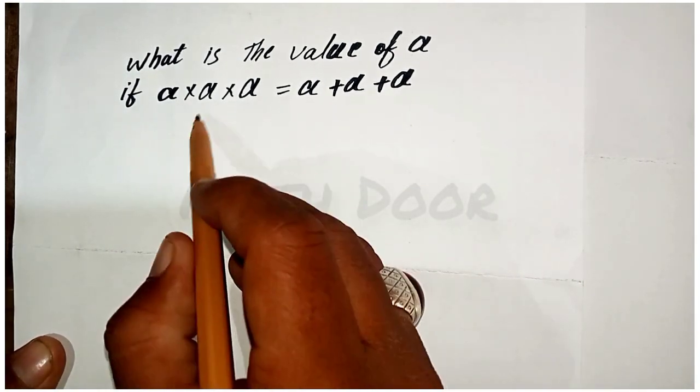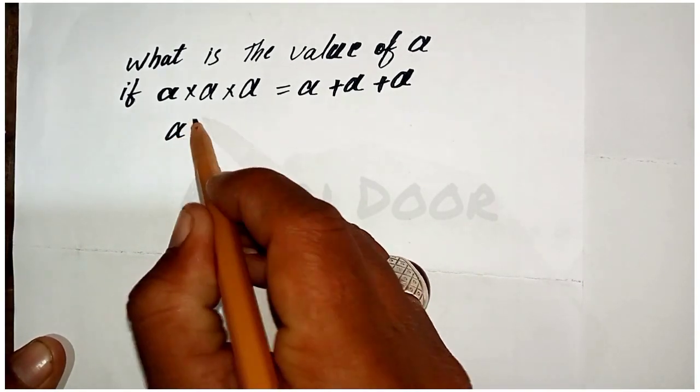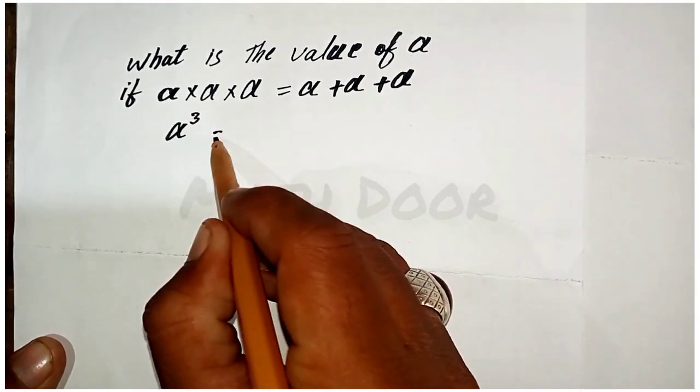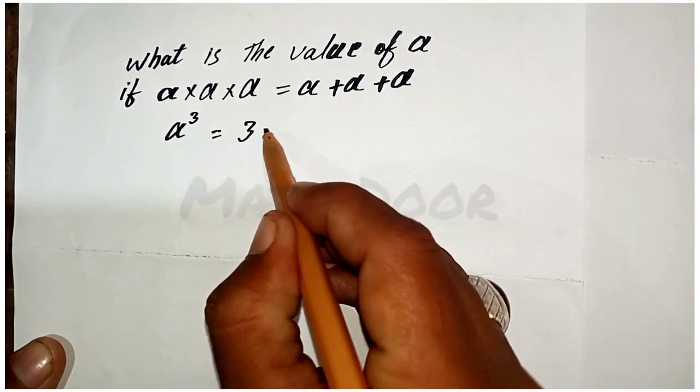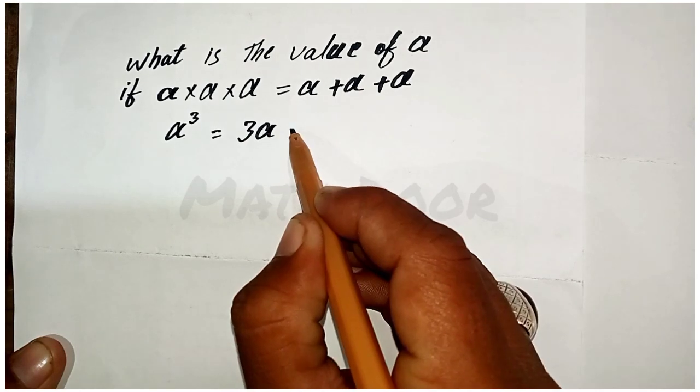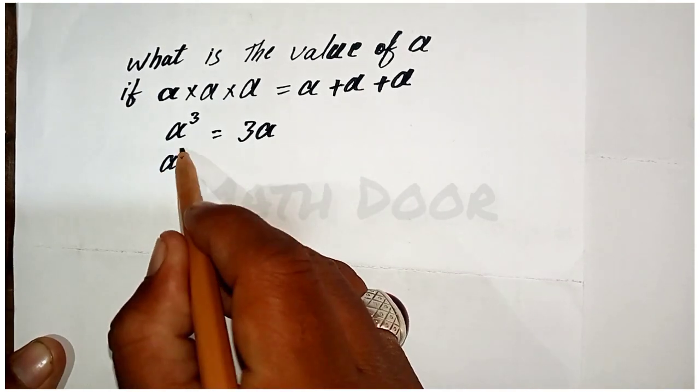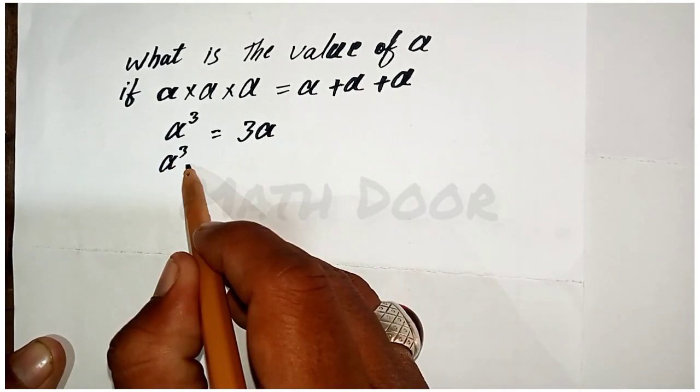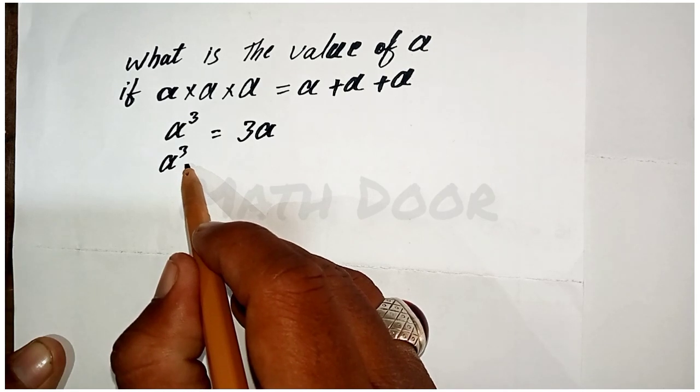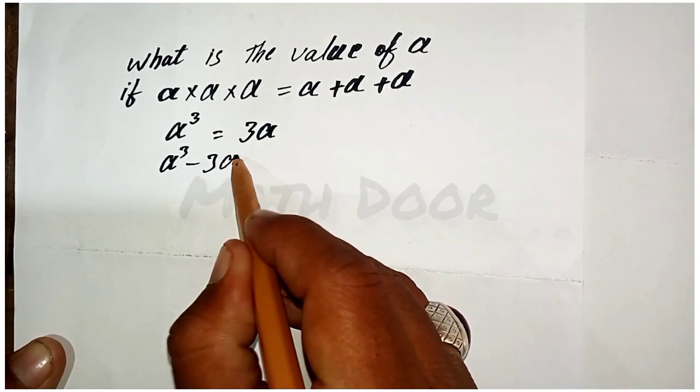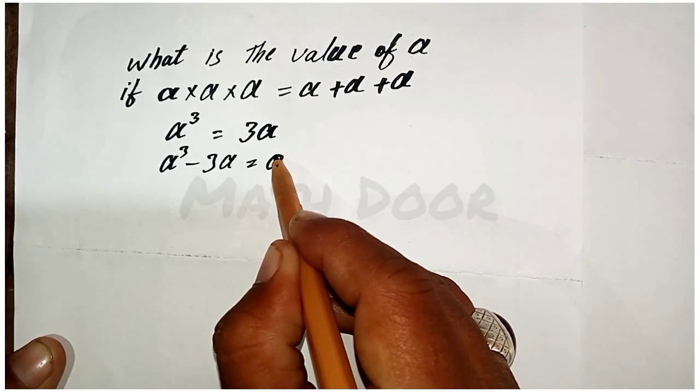We multiply these three values to get a³ and this equals 3a. Now in the next step, we take this 3a to the right side of the equation. We will get a³ - 3a = 0.